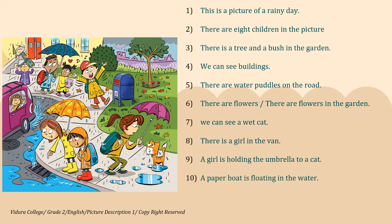Next: a girl is holding the umbrella to a cat. Then: a paper board is floating in the water. There is a blue mailbox. Then the last one: some children are holding books. Now children, with those given words, I have made twelve sentences.